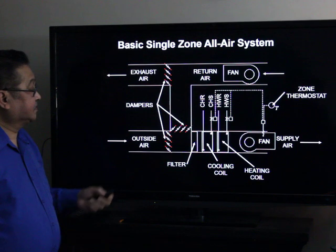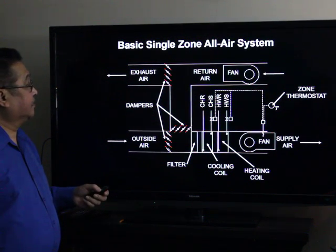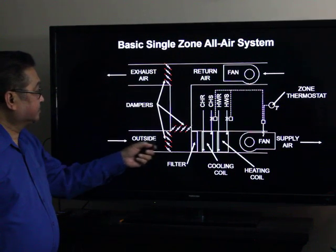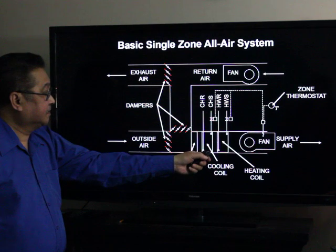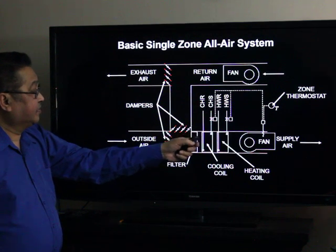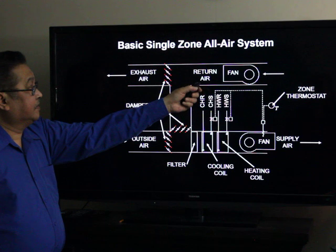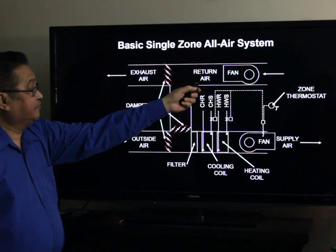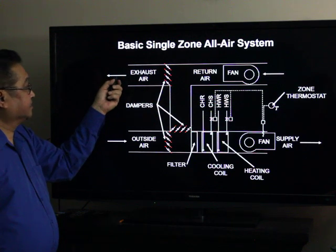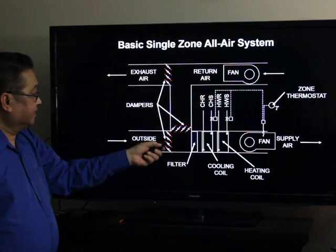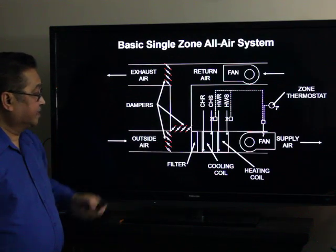This is an illustration of the basic single zone all air system. We have here the outside air going through the filter, heating coil, cooling coil, heating coil, and the supply air fan, going to the zone. And you have the return air fan, which is interlocked with the supply air fan, going to the exhaust air, with part of it being returned to mix with the outside air.